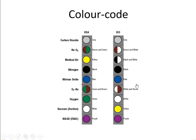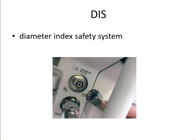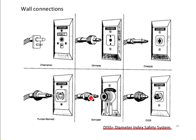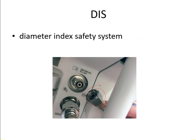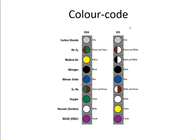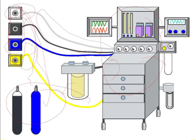This is the color code system. The other safety system is the diameter index system. Each pipeline can only connect to its wall connector with a specific diameter that is different from one gas to another. For example, the oxygen connection diameter is different from the air connection diameter. The color code and the diameter index system together prevent the disastrous complication of supplying the wrong gas to the patient. The pipelines deliver gas from the wall of the operation room into the anesthesia machine through both these safety systems.